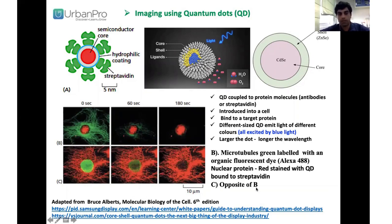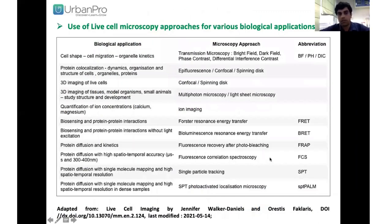The opposite labeling arrangement is also possible, where microtubules are labelled with red dye and the nucleus with green dye. These are the different biological applications and their microscopy approaches used in live-cell imaging techniques to study cell shape, cell migration, and organelle dynamics.